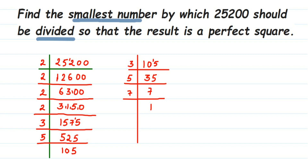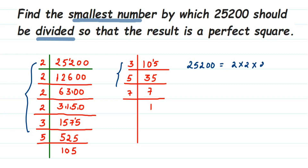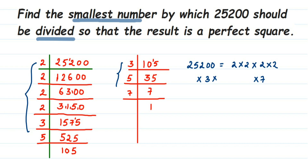Let's rewrite all the factors: 25200 = 2 × 2 × 2 × 2 × 3 × 3 × 5 × 5 × 7. Rearranging them for easy pairing: (2 × 2) × (2 × 2) × (3 × 3) × (5 × 5) × 7. If a number is a perfect square, all its factors come in pairs.